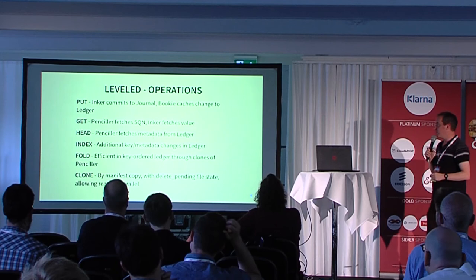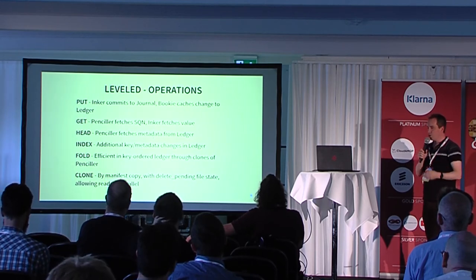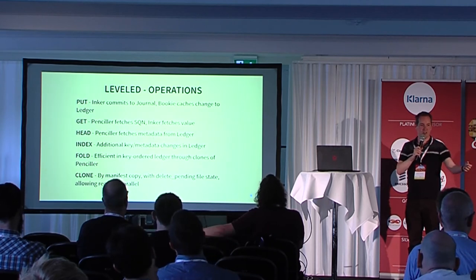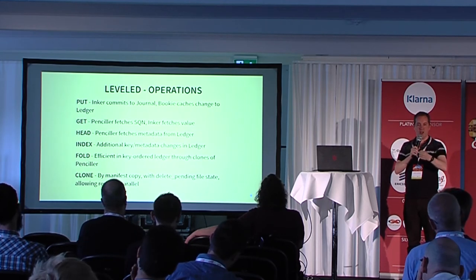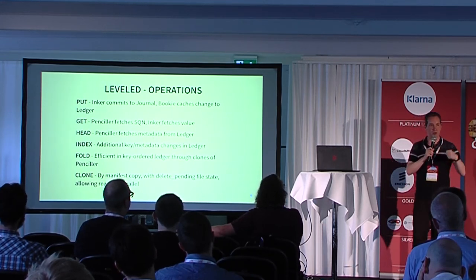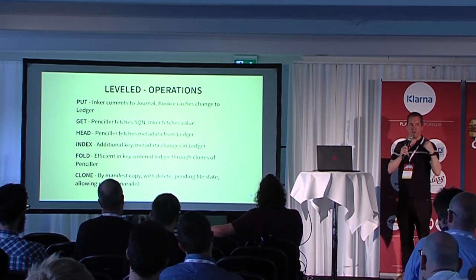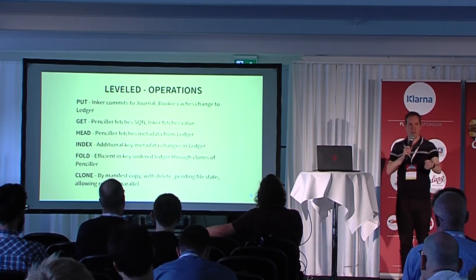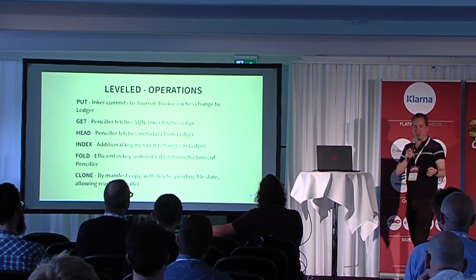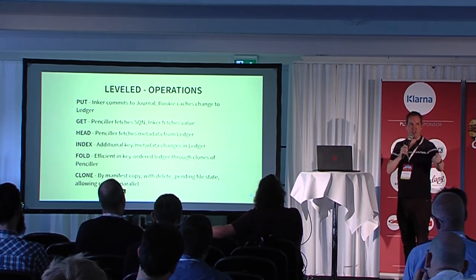We support these basic operations. Put writes to the journal and the bookie caches the change. Get I've been through. Head is faster than a get. We also support indexes: when we put an object, it may have index changes — we write the object to the journal as a permanent record, and when we write changes to the merge tree, we also write additional keys for any indexes added so we can query them in future. For efficient fold, the ledger is entirely in key order, so we can fold over those indexes and over the keys efficiently if we're interested in just keys or keys and metadata. To support folds without blocking the penciler, bookie, or inker, we need to be able to clone the store — do snapshots.